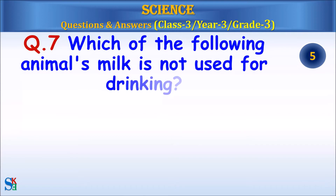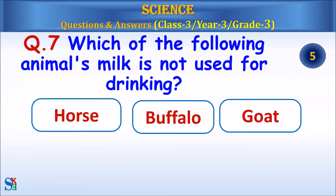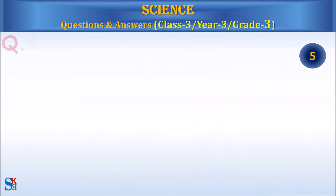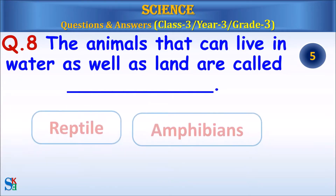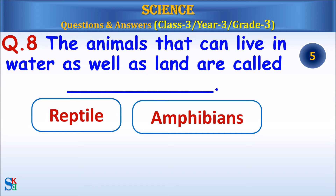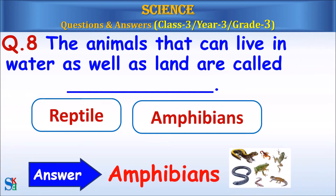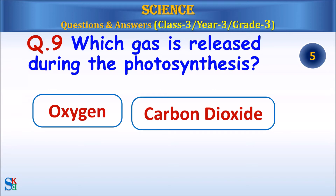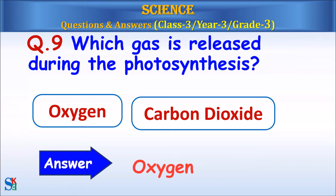Question 7: Which of the following animal's milk is not used for drinking — horse, buffalo, or goat? Answer: Horse. Question 8: The animals that can live in water as well as land are called reptile or amphibians? Answer: Amphibians. Question 9: Which gas is released during photosynthesis — oxygen or carbon dioxide? Answer: Oxygen.